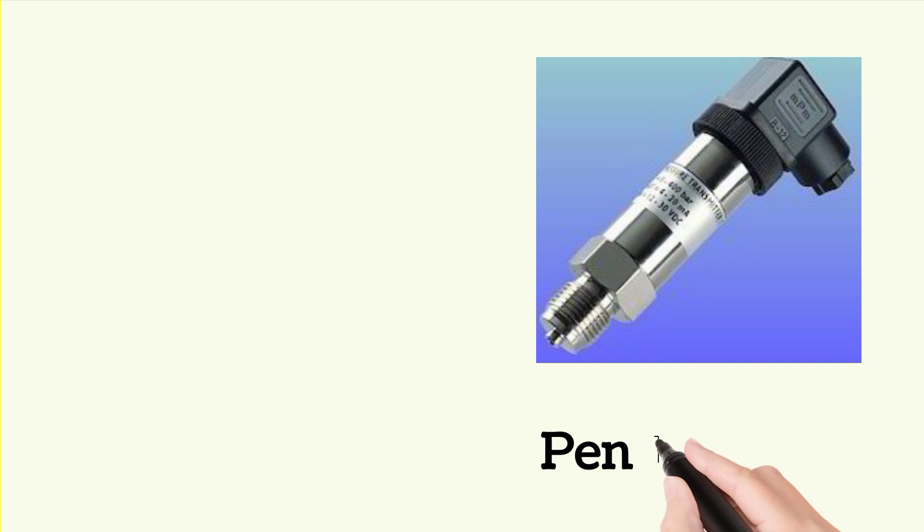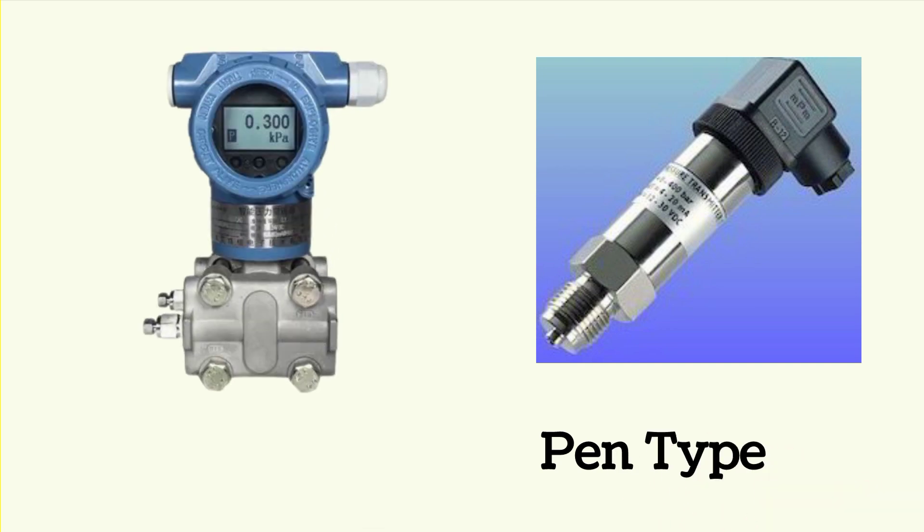Pan type pressure transmitter is shown in the right side picture. DP type pressure transmitter is shown in the left side picture. Level transmitter and flow transmitter are examples of DP type transmitter.